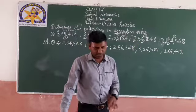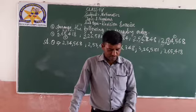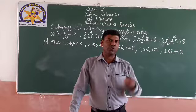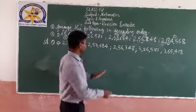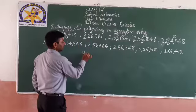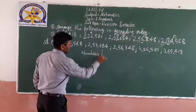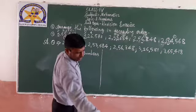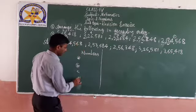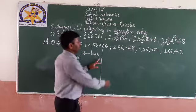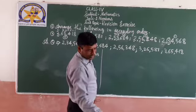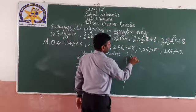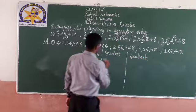So the ascending order is: 2,53,568; 2,53,684; 2,56,348; 3,26,581; 3,65,418. Likewise you will have to solve ascending and descending order — first compare, then write the numbers and it will be easy for you.